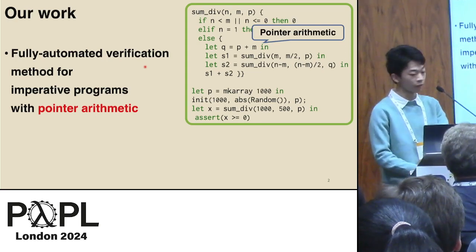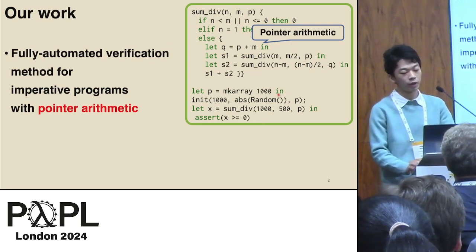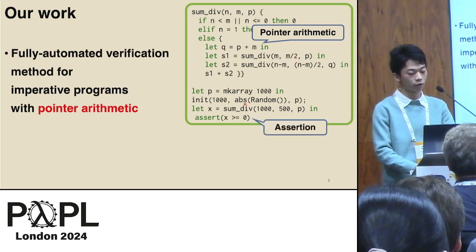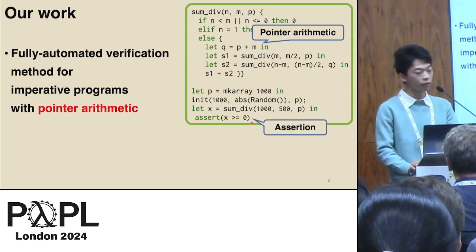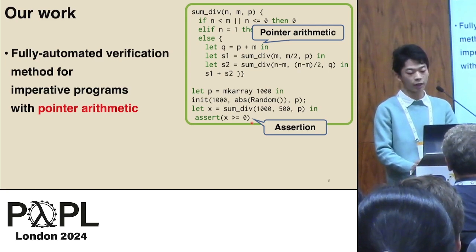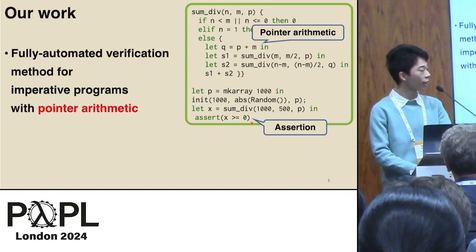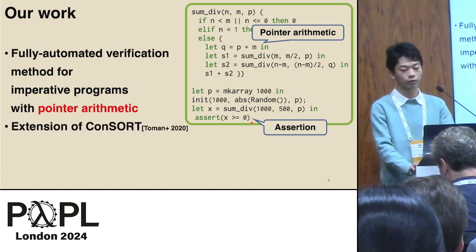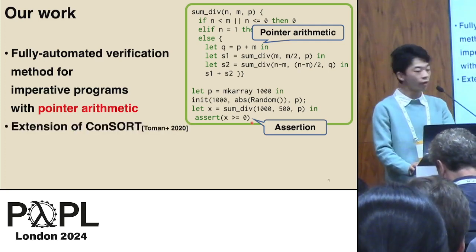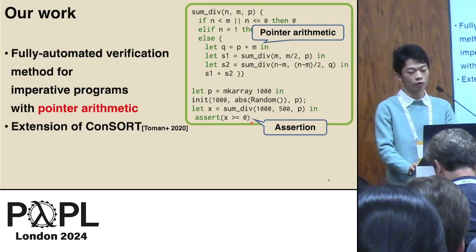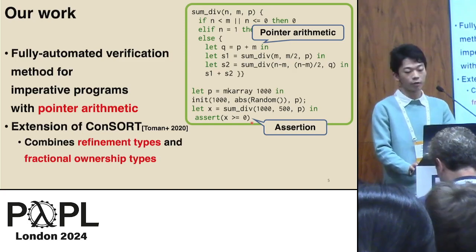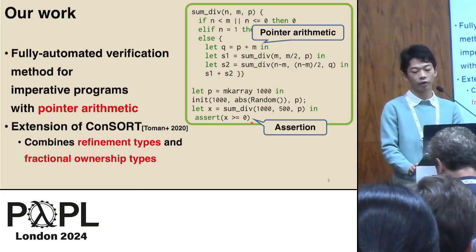Here's an example of a target program which includes pointer arithmetic and assertions. The verification goal is to check the lack of assertion failures in this kind of program containing pointer arithmetic. Our method is an extension of the approach of consort proposed by Thomann et al., which combines refinement types and fractional ownership types.